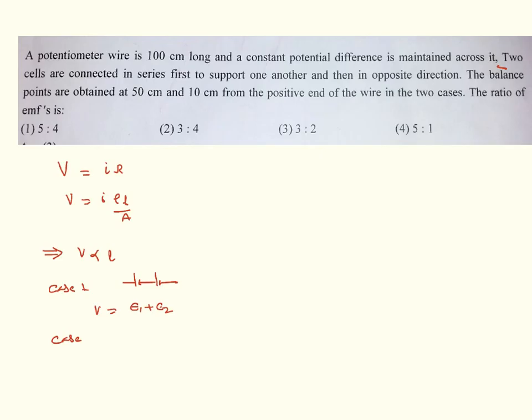Whereas in the second case, one cell is connected in reverse to the other. Therefore, the EMFs are opposite, E1 minus E2. In the first case, it is given that they are having some balancing length. In the second case also, it is given that they are having some balancing length.